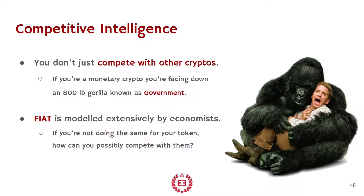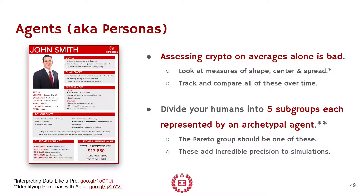Fiat is modeled extensively by economists at every level of government — at the federal level, down to the municipal level, within legislative branches, within executive branches. They're all looking at the money supply to understand what's going on. So if you compete with them and you're not doing the same kind of modeling for your token, good luck. Another great lesson of both economics and data science is that guiding by averages alone is a very, very bad idea.